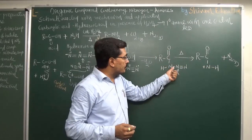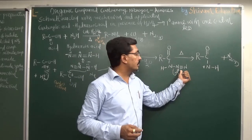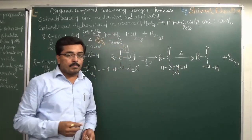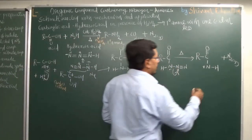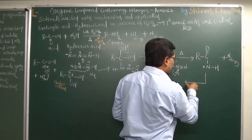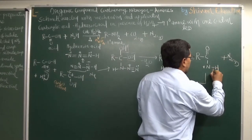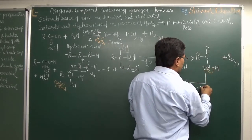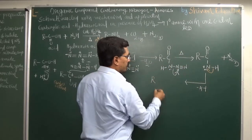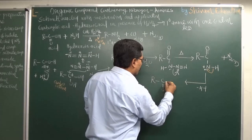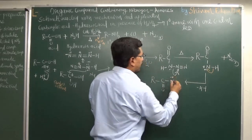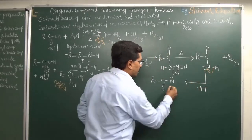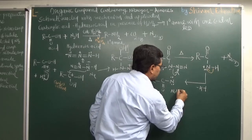This nitrogen has a positive charge, so to obtain stability it takes electrons from the adjacent bond. The bond electron pair transfers onto nitrogen, H⁺ is lost, and we get a structure where nitrogen has one non-bonding electron pair. This intermediate is known as a nitrene.